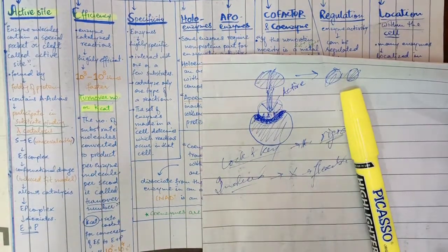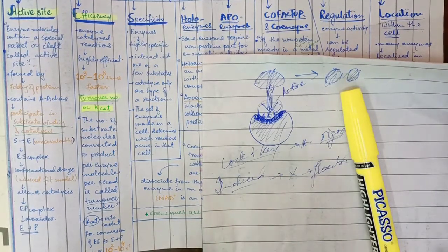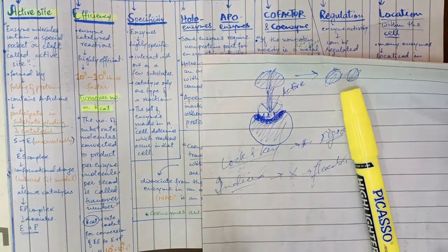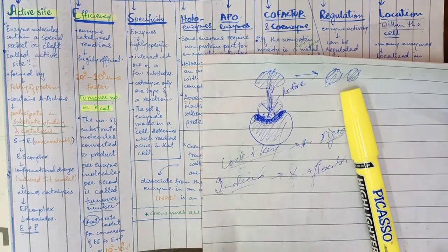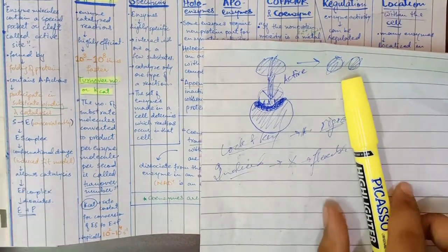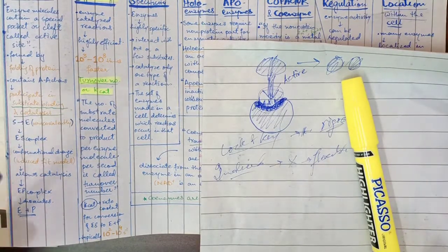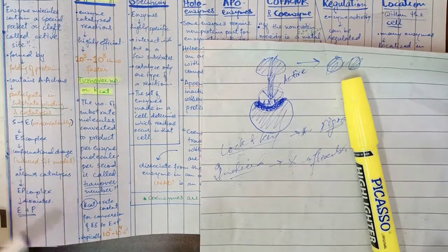The turnover number refers to how many substrate molecules inside an enzyme can convert to product. K-catalysis is the rate constant for the conversion from ES complex to E plus P. This represents the average rate per second, and shows how many substrates one enzyme molecule converts.